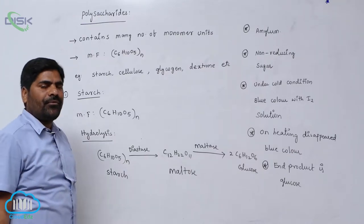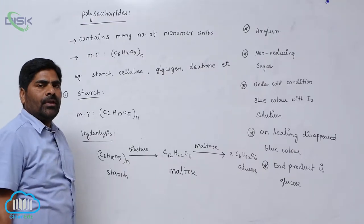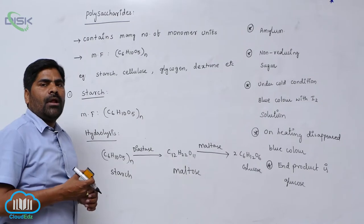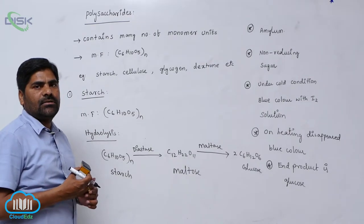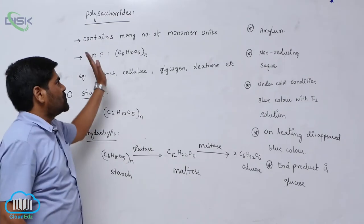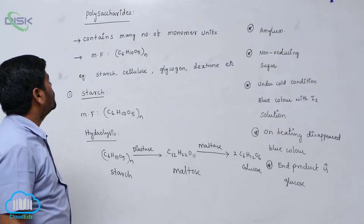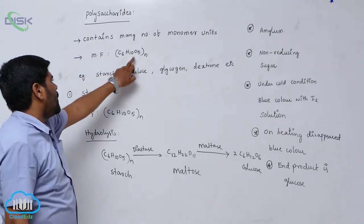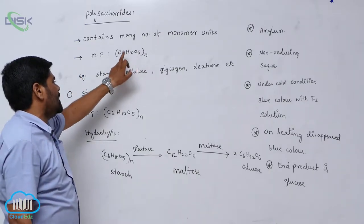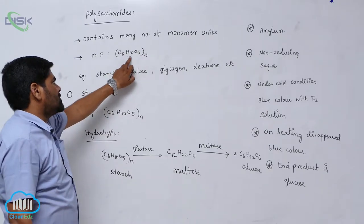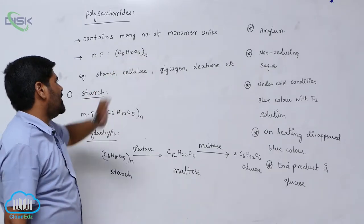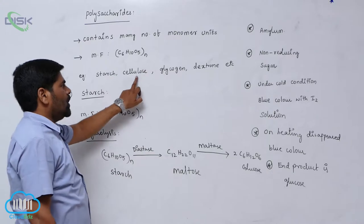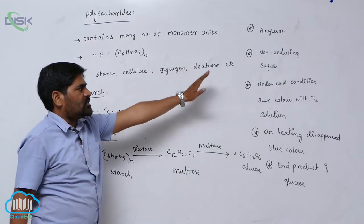Polysaccharide means it contains many number of monosaccharide units with glycosidic linkage. The general molecular formula of a polysaccharide is (C6H10O5)n. Examples are starch, cellulose, glycogen, dextrose.